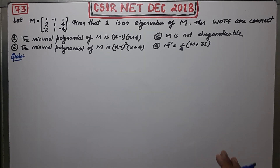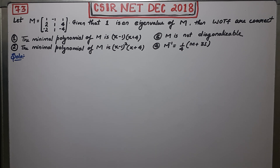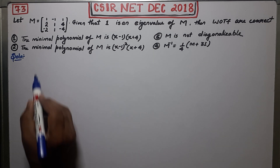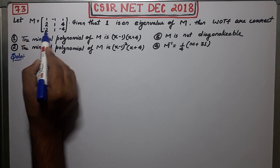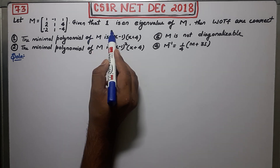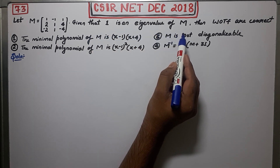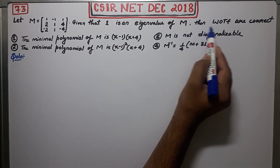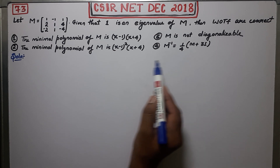Welcome guys. This is question number 73 of NET December 2018, and it's a question of linear algebra from Part C of the paper. Let M equal this given matrix. Given that 1 is an eigenvalue of capital M, which of the following are correct?